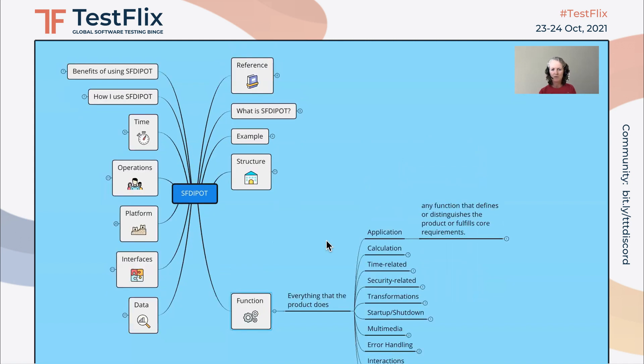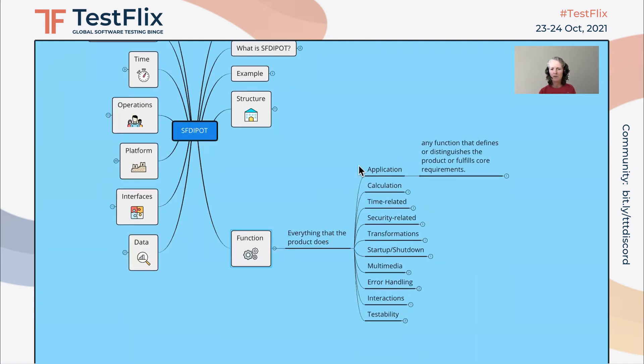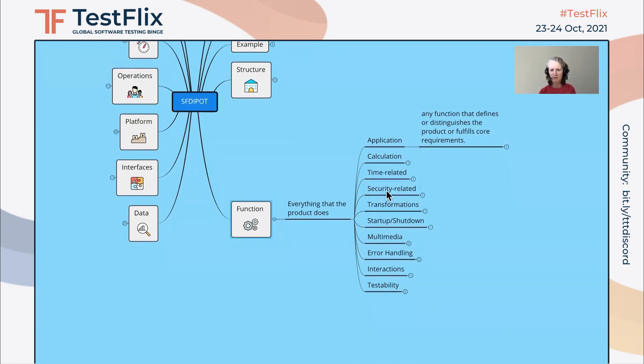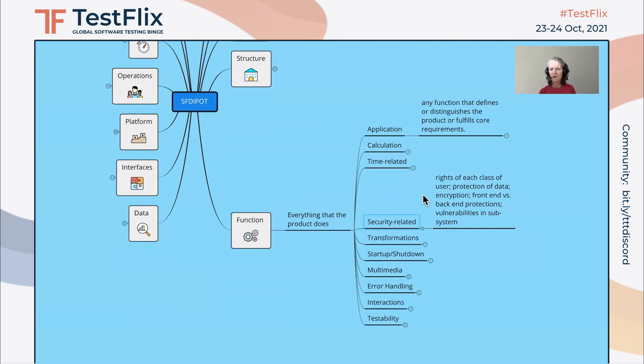Function. So for function, there's a lot more than just the core functionality of the application or the feature that needs to be looked at. But here are other categories that could be looked at as well to see if they apply. So in terms of this example, perhaps one that's important could be security related.